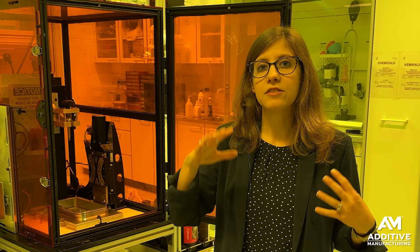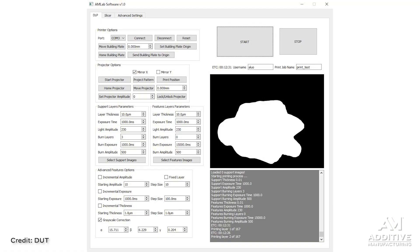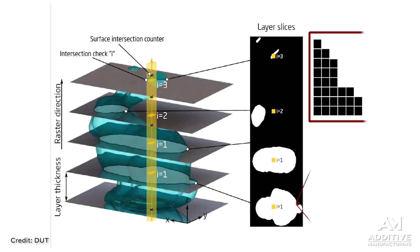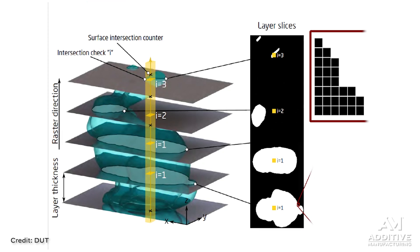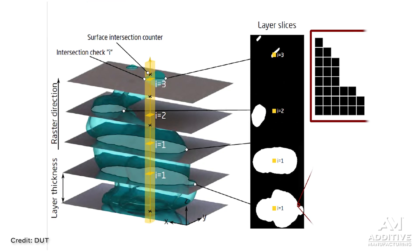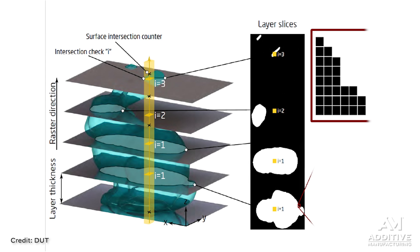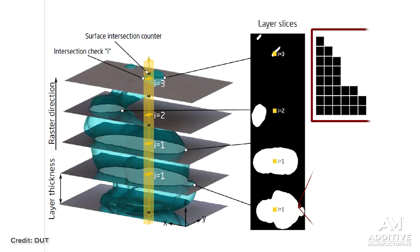The material that gets cured is the result of the software telling the projector which of its pixels should be on or off at any point in each layer. So the material that ultimately solidifies coordinates with the number of pixels that were turned on at any given point. But pixel count is not the only factor that influences feature detail.